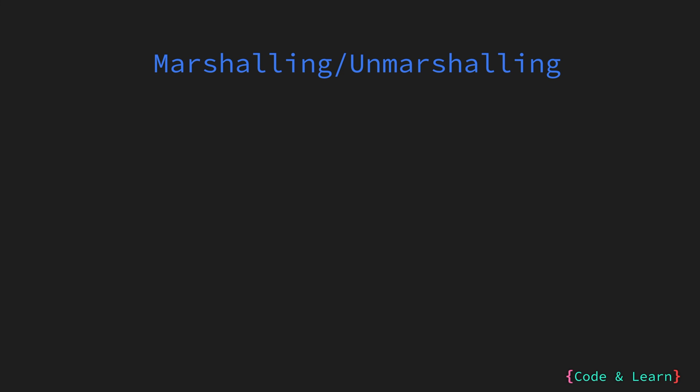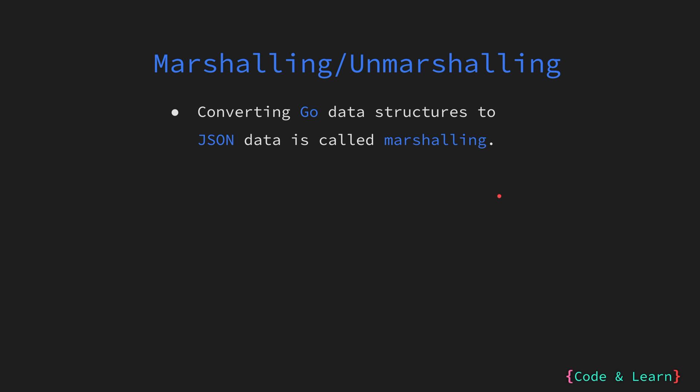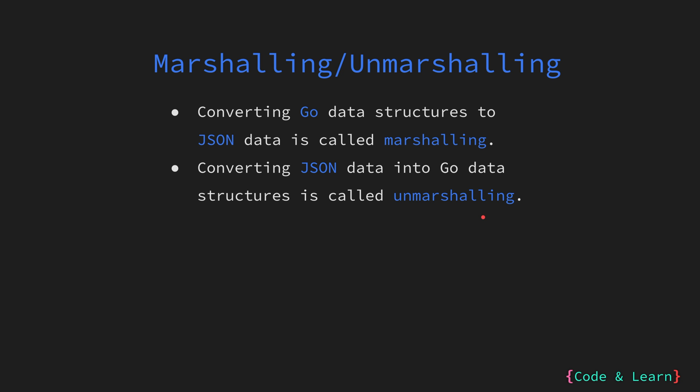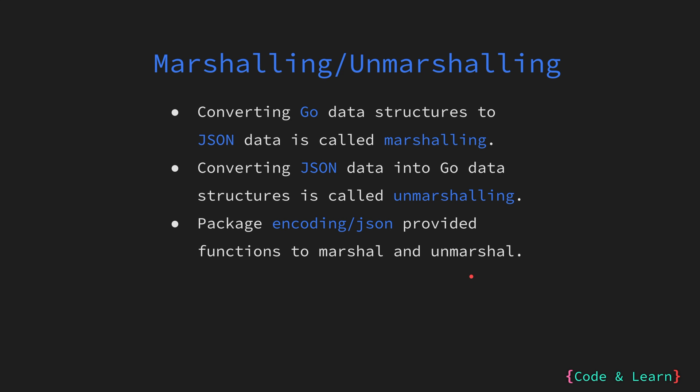First, let us look at marshalling and unmarshalling of JSON data. In Go, the process of converting Go data structures like structs, maps, and slices into JSON data is called marshalling. On the other hand, the process of converting JSON data back into Go structs, maps, or slices is called unmarshalling. The standard library package encoding/json provides the functions marshal and unmarshal to perform these operations.